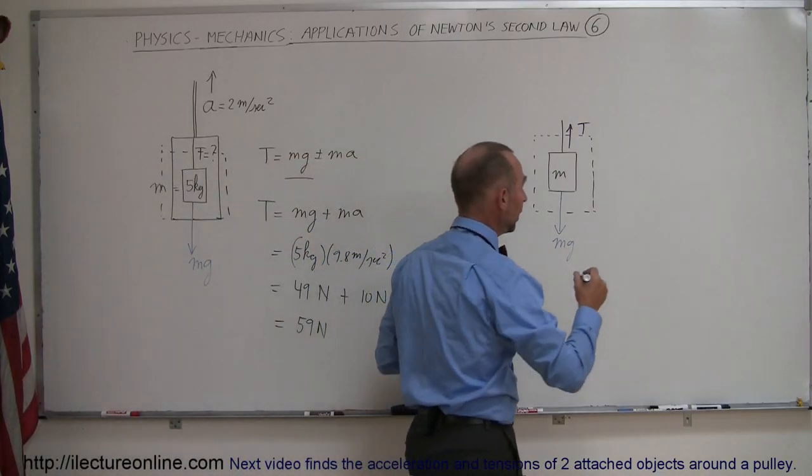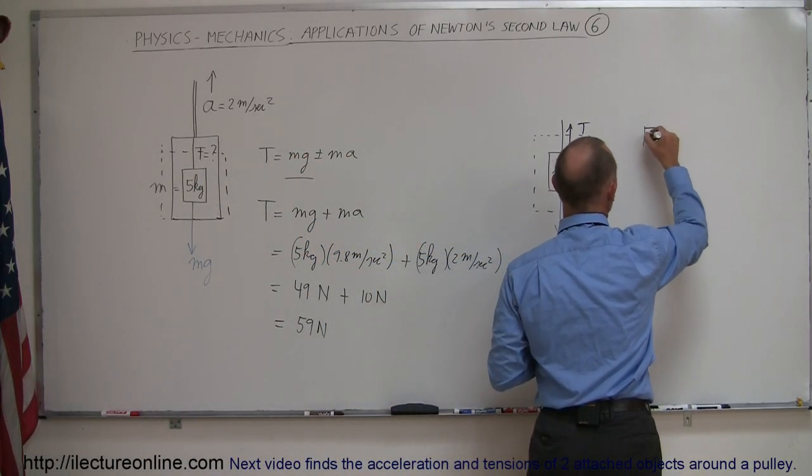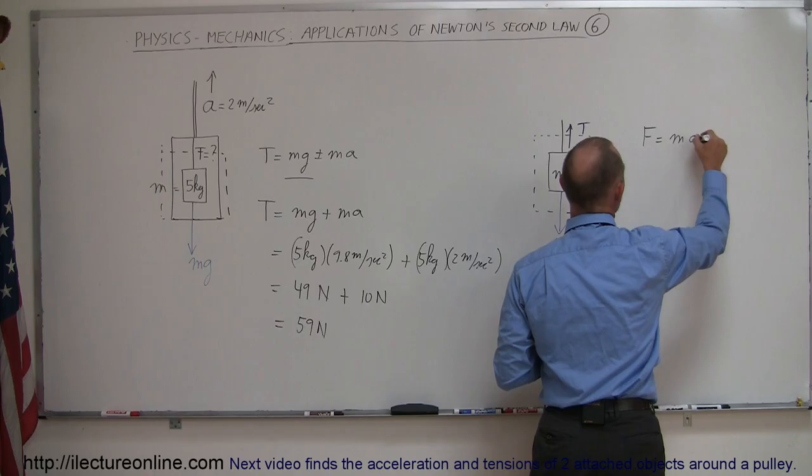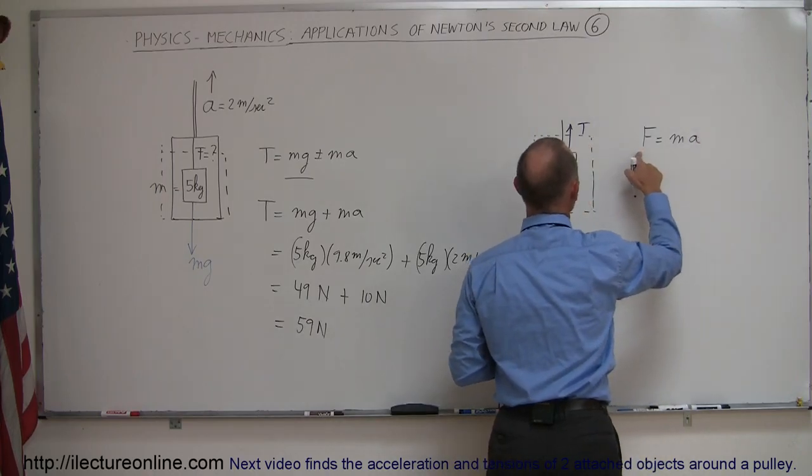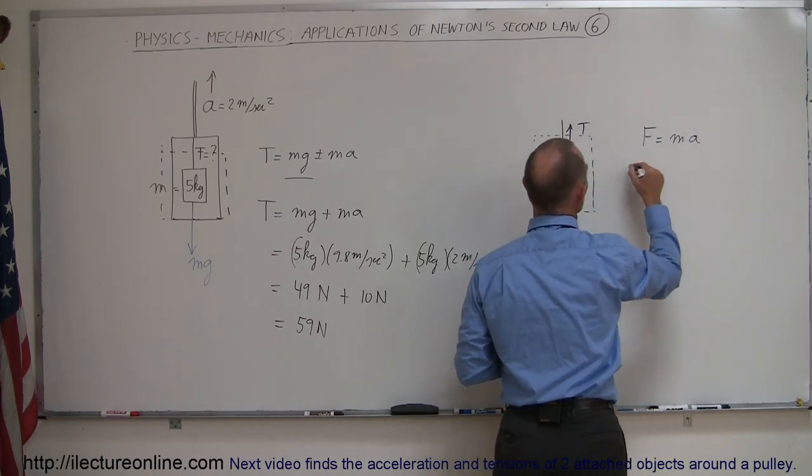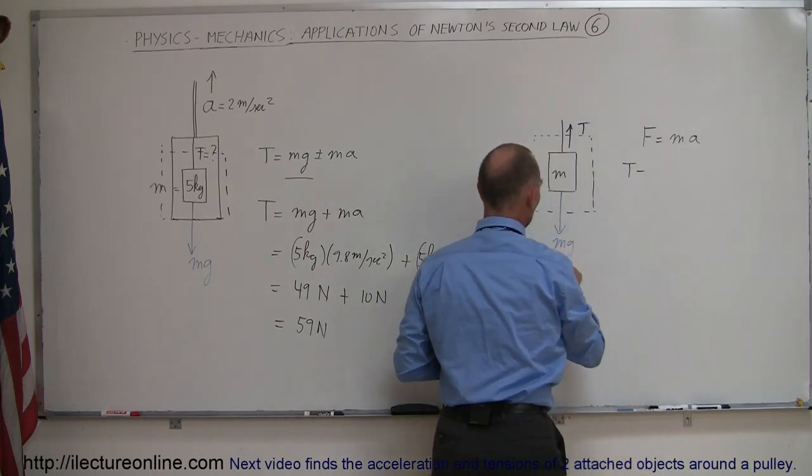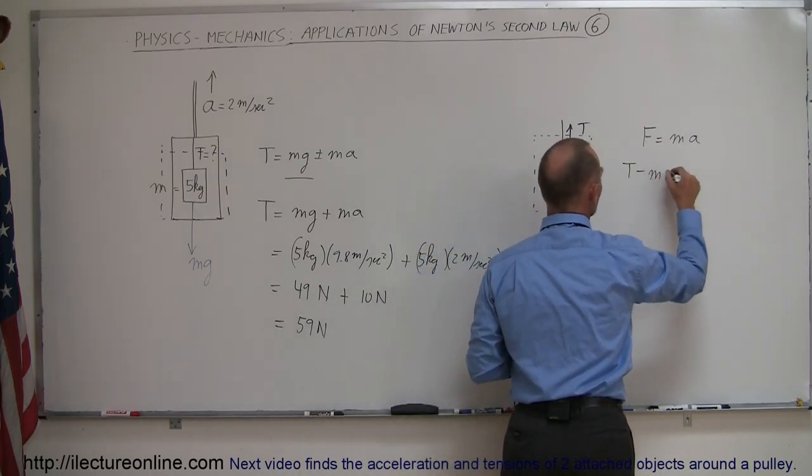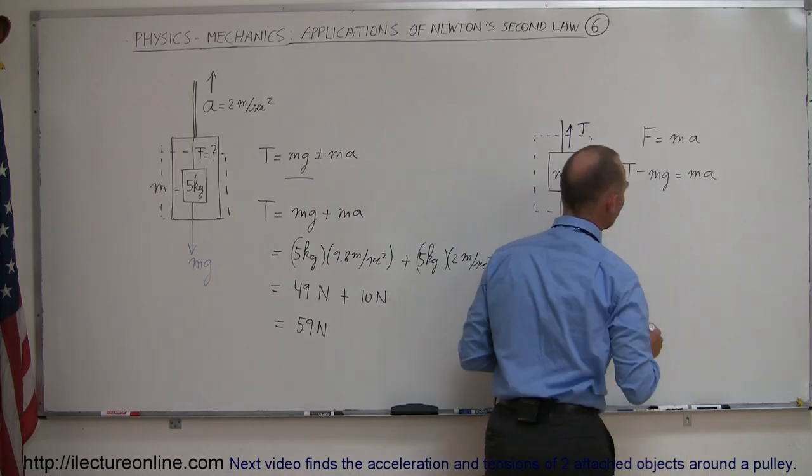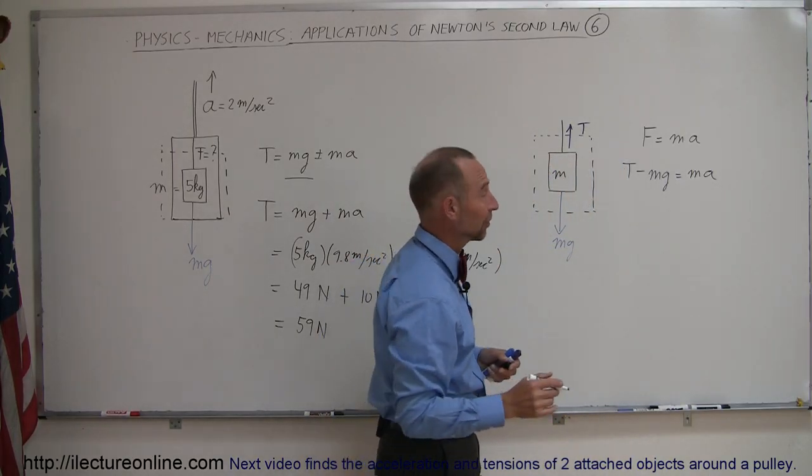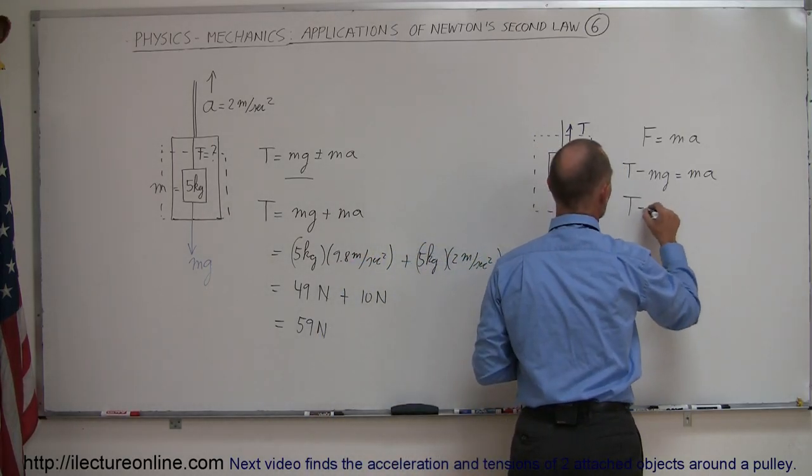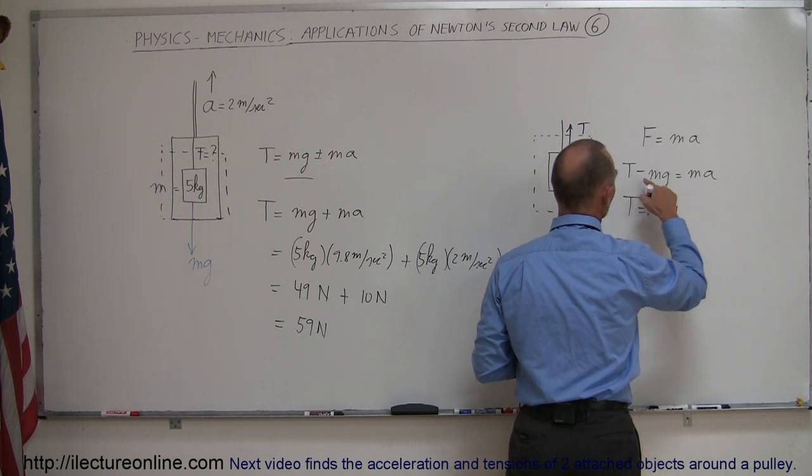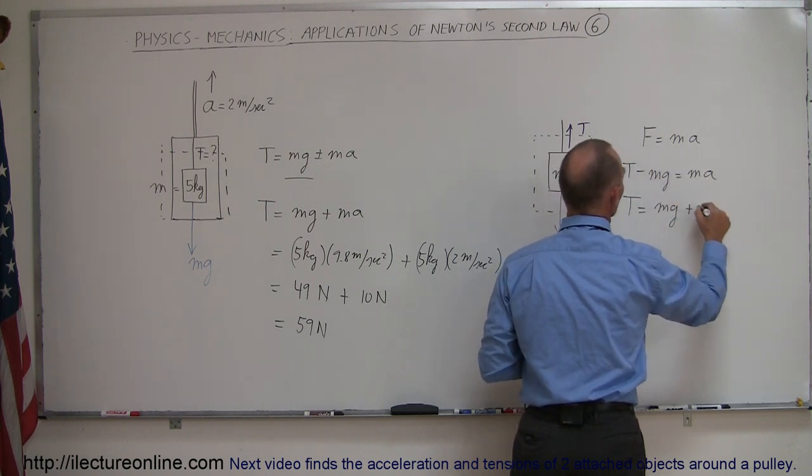we can use Newton's second law that says F equals ma. And so the force here required would be the tension minus the mg is going to equal the mass times acceleration. And then, of course, if we solve this for tension, we get tension is equal to mg plus ma when we cross the equal sign,